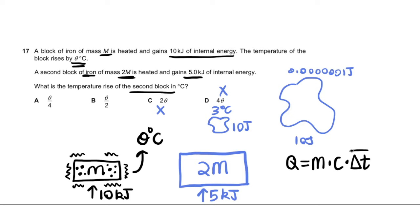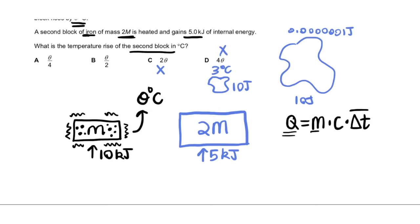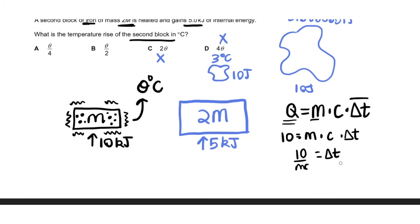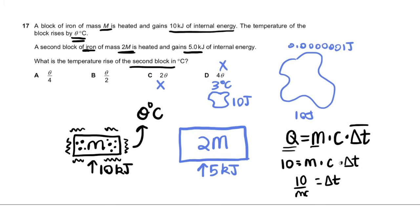So this is the thing we're looking for. We know all of this. We're looking for this. Well, in the first object, the mass is M and Q is 10. So we rewrite this as 10 is equal to M into C. C is just a constant, into delta T, the variable we're looking for. So 10 upon MC is equal to delta T.